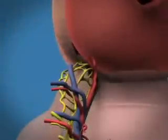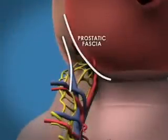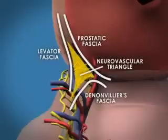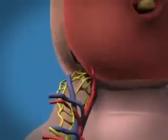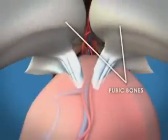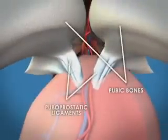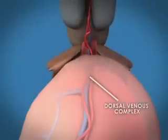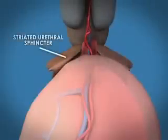The neurovascular bundles lie on each side of the prostate, between the prostatic fascia and the levator fascia. On the bottom, they're bounded by Denonvilliers' fascia. The space in which the bundles are located is the neurovascular triangle. Moving to the apex of the prostate, we can see the pubic bones and puboprostatic ligaments, the dorsal venous complex, and the striated urethral sphincter.